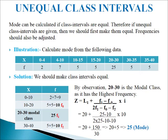For 10 to 20, we combine 10 to 15 and 15 to 20: 5 plus 5 equals 10. For 20 to 30, the frequency is 25 exactly. For 30 to 40, we combine 30 to 35 and 35 to 40: 5 plus 5 equals 10. By inspection method, 25 is the highest frequency, so it is F1, in the modal class of 20 to 30. F0 = 10 and F2 = 10. Applying the mode formula and calculating, we get mode = 25 for this illustration.